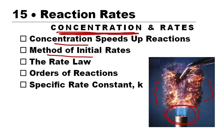We want to use something called the method of initial rates in order to come up with a rate law. The rate law is going to use this idea of orders of reactions. Also in this rate law, there's going to be a little constant, K, and we'll calculate that.